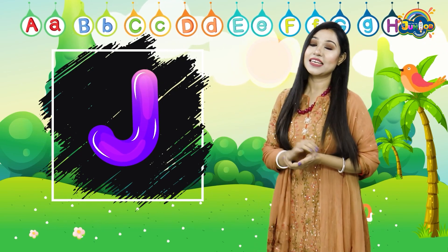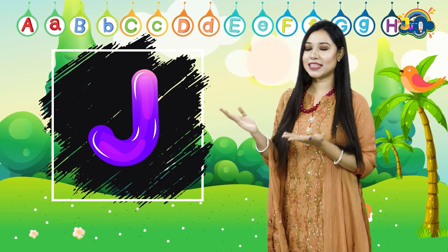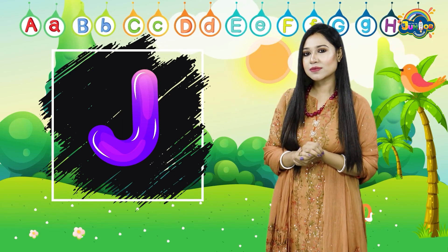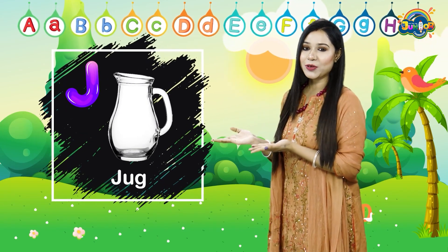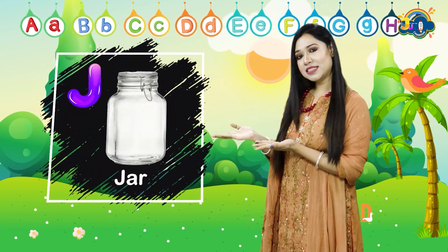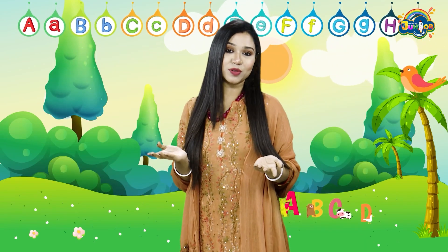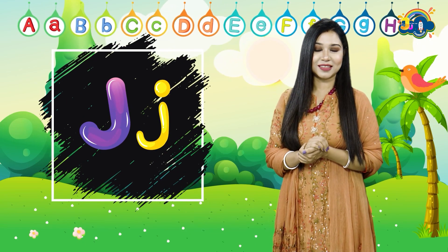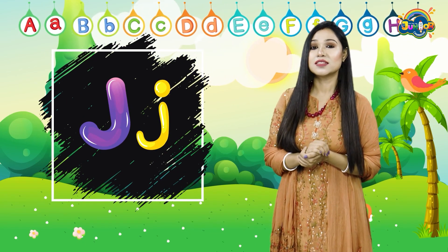Next letter is J. What's the letter? It's J. J for what? J for jug. J for jar. Let's make the sound. The sound of J is J. What's the sound? It's J.